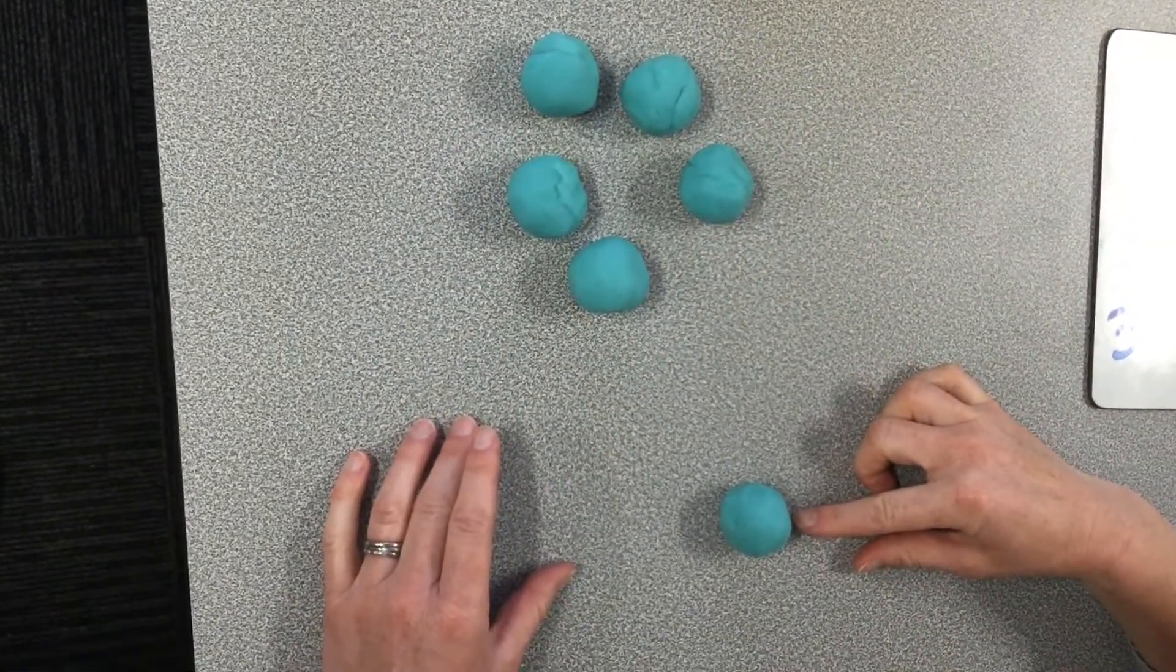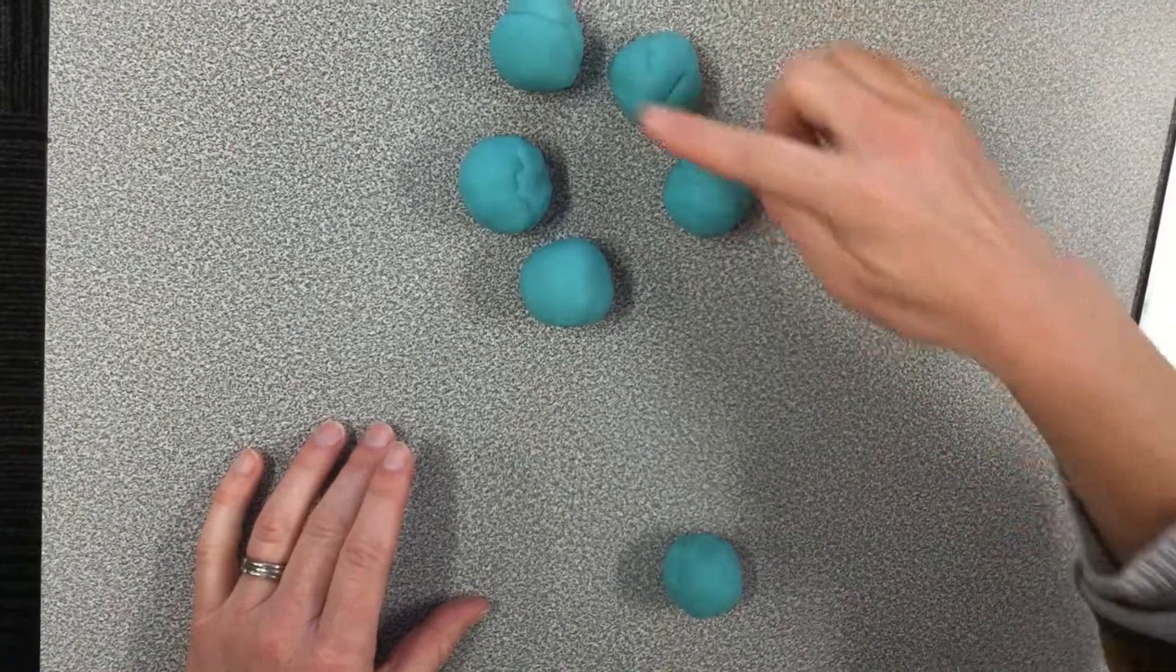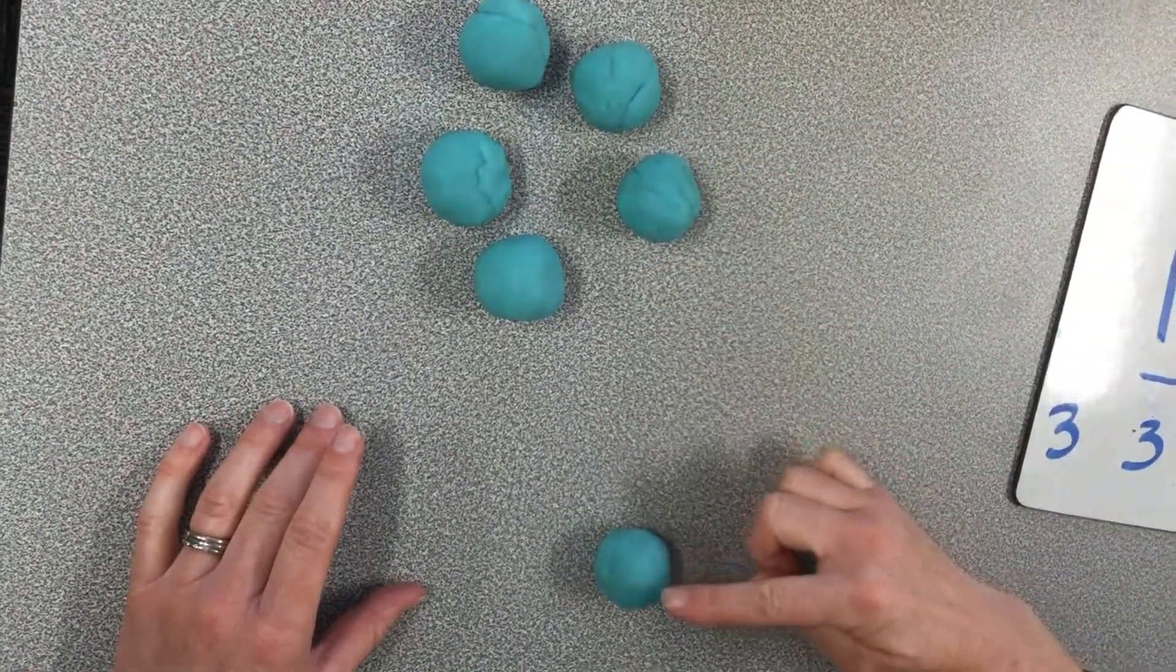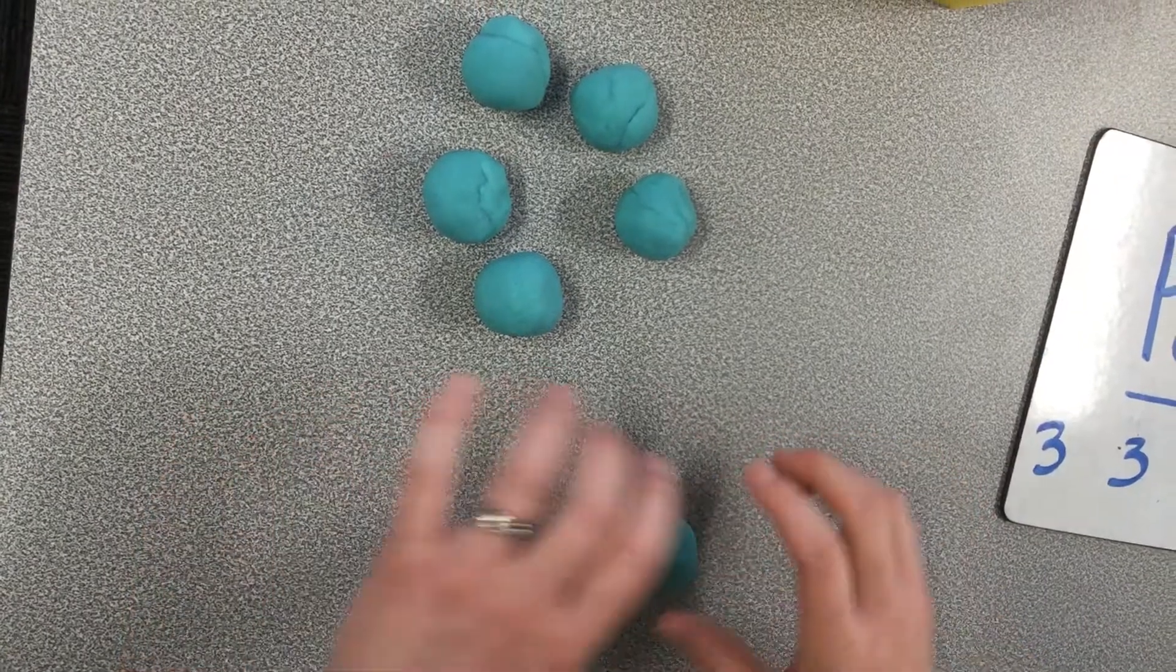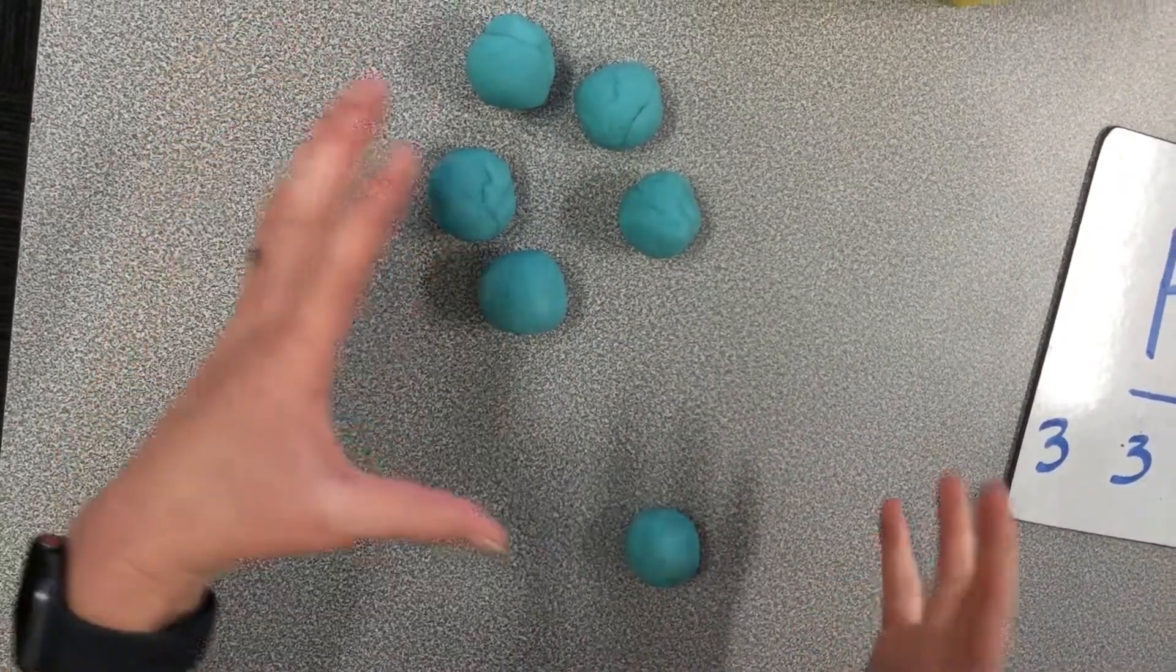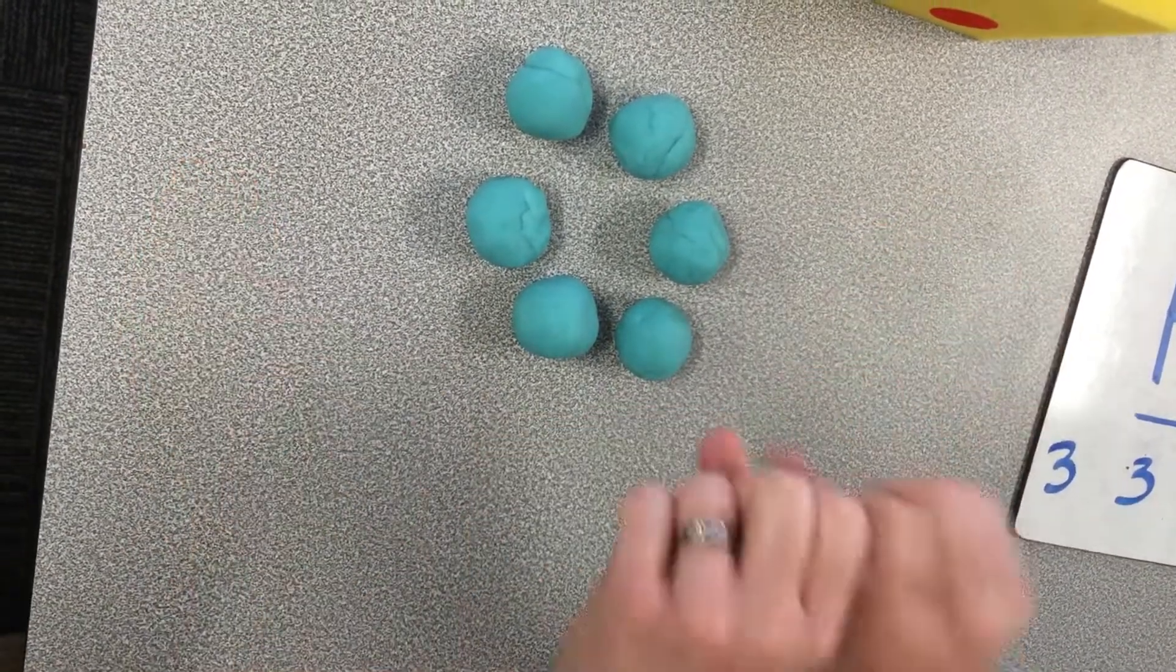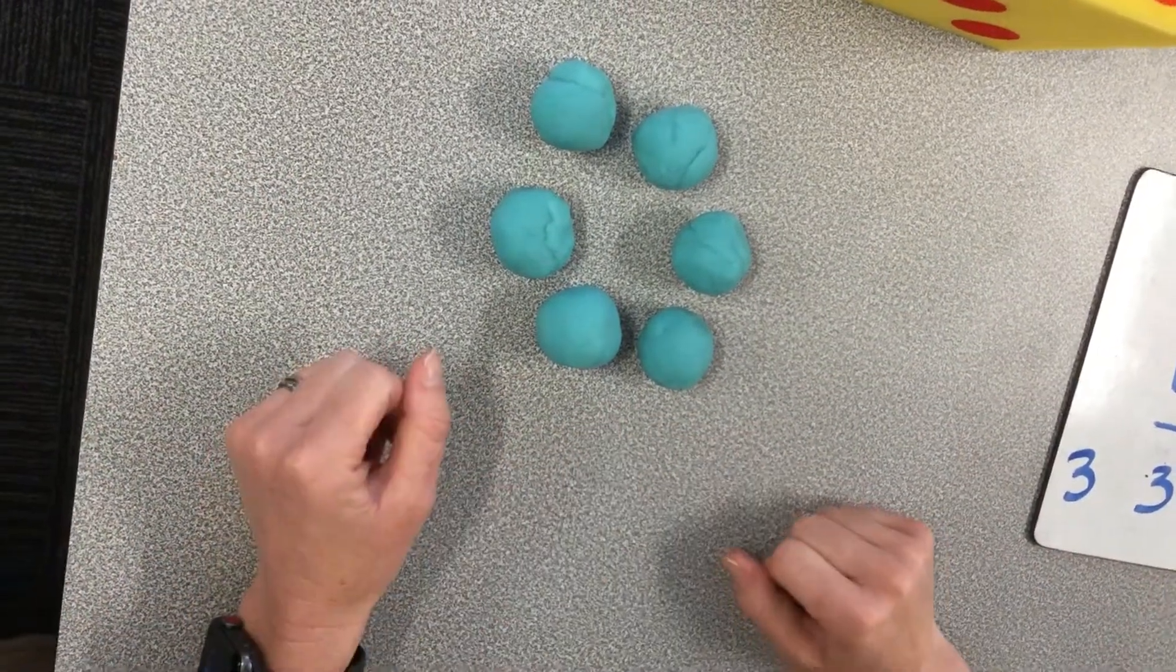And you know what? It'll still make six. Let's check. One, two, three, four, five, six. It doesn't matter that I've broken them apart into different groups. When they come back together, they're still the same group of six. So when we partition, then we can still bring them back together.